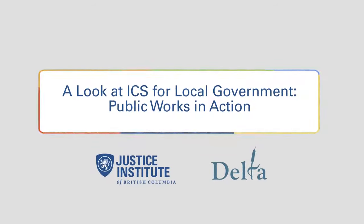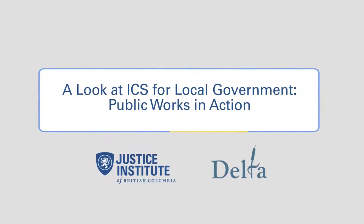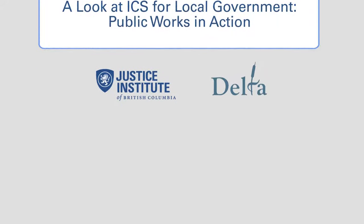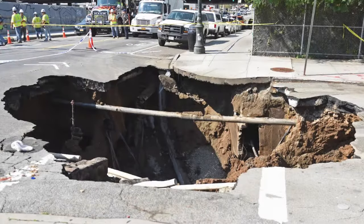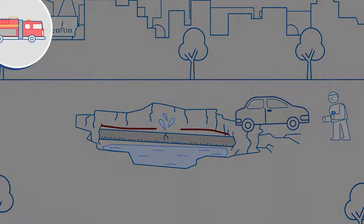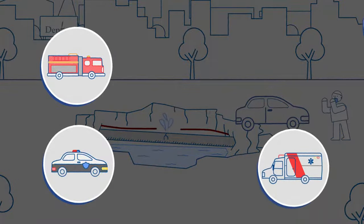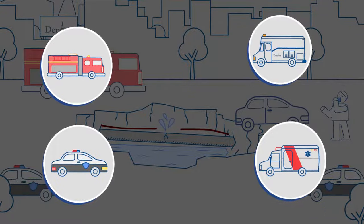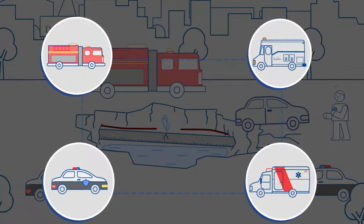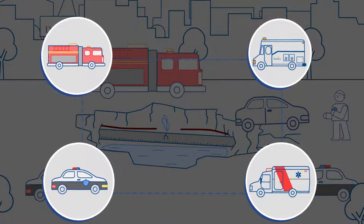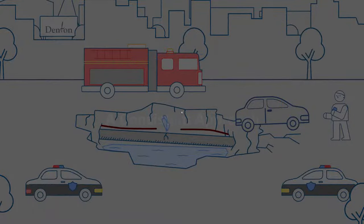A look at ICS for local government — Public Works in action. An emergency can strike at any time and might require Public Works to collaborate with others on site. Just like fire, police, and ambulance, Public Works personnel will need to respond in a safe and coordinated manner. To do this effectively, these agencies need to use a consistent approach.